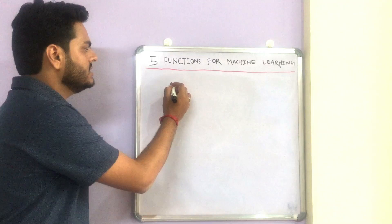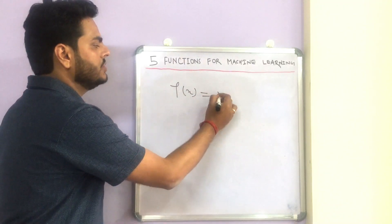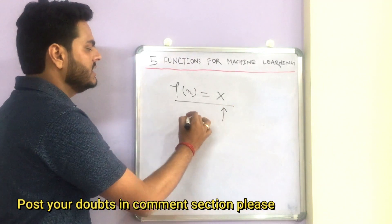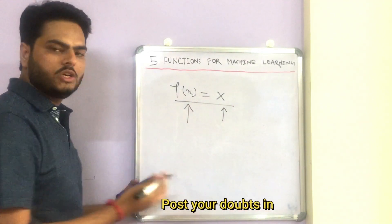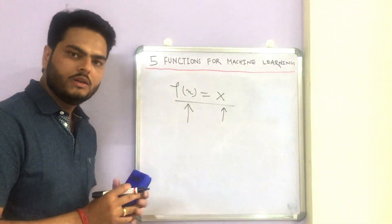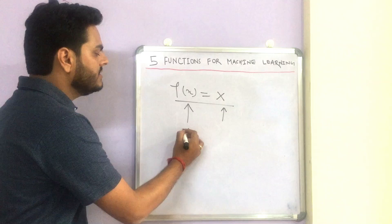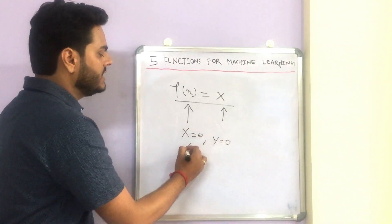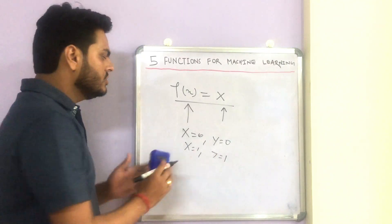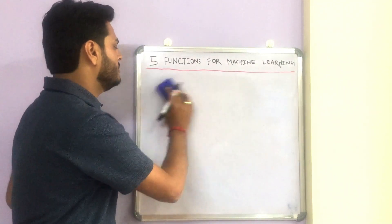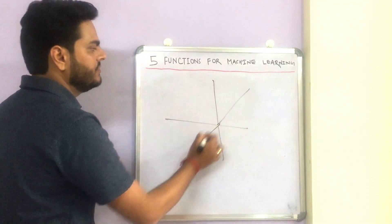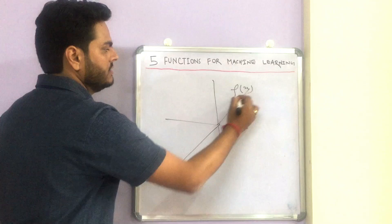A function can be very simple, such as f(x) = x, which means whatever value we give as input, the function gives the same value as output. If we try to plot this function in the x-y plane: when x is 0, y will be 0; when x is 1, y will be 1, and so on. So if we plot this on the x-y plane, it will look like the line y = x.